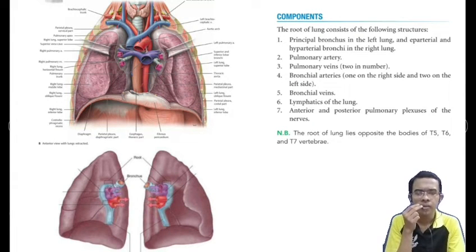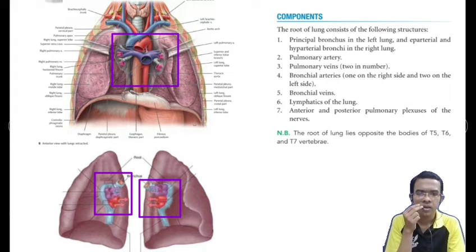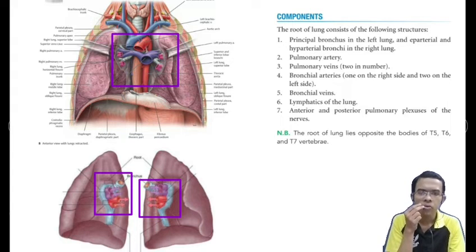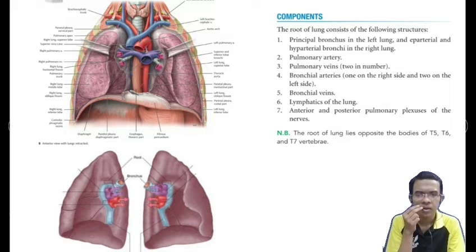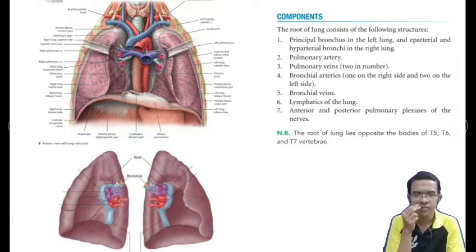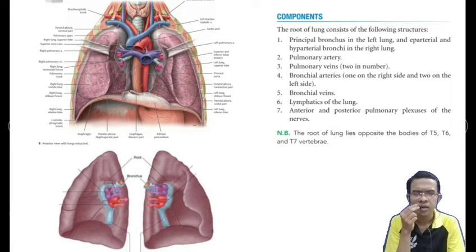The components of the root of the lung are: number one, the principal bronchus in the left lung and the eparterial and hyparterial bronchus in the right lung; number two, pulmonary artery; number three, pulmonary veins — two in number; number four, bronchial arteries — one on the right side and two on the left side; number five, bronchial veins; number six, lymphatics of the lung; and number seven, anterior and posterior pulmonary plexus of nerves. In the diagram we can see the principal bronchus, pulmonary artery, and pulmonary veins.